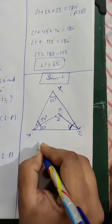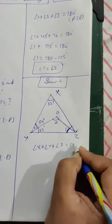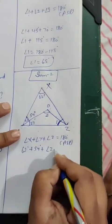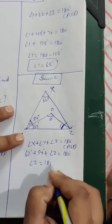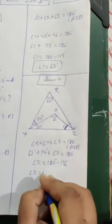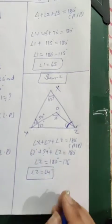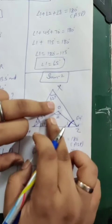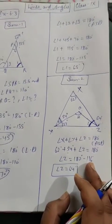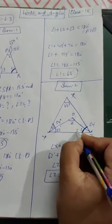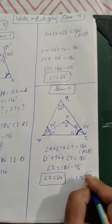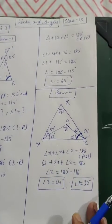Now, angle X plus angle Y plus angle Z equals 180 degrees by angle sum property. Angle X is 62 degrees, Y is 54 degrees. So from here we can find angle Z: 180 degrees minus 62 minus 54 equals 64 degrees. So angle Z is 64 degrees. Now, ZO is the bisector. If this is 64 degrees and ZO is the bisector, then it divides into equal parts. So this is 32 degrees and this angle is also 32 degrees. Therefore, angle 1, which is OZY, is 32 degrees.